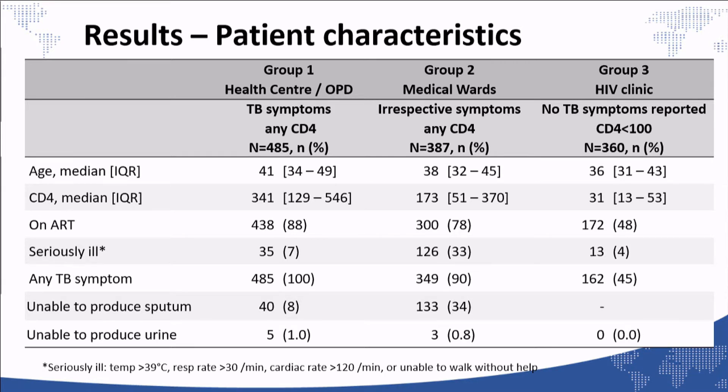This table shows the characteristics of the patients enrolled in the study across the three groups. In group one — patients who self-reported TB symptoms seeking care at a health center — the median CD4 was relatively high at 340, and only 7% were seriously ill. This is important because being seriously ill is one of the eligibility criteria for LAM, meaning few patients in this group would currently be eligible. In group two, hospitalized patients, almost all had at least one TB symptom after being asked.